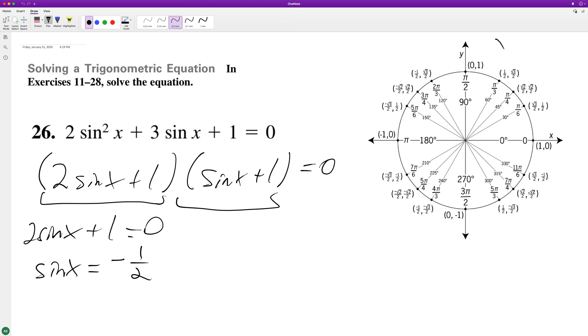Sine, which is in the x, y component here, we look for the negative 1 half. So it looks like it's going to be at 7 pi over 6 and 11 pi over 6.